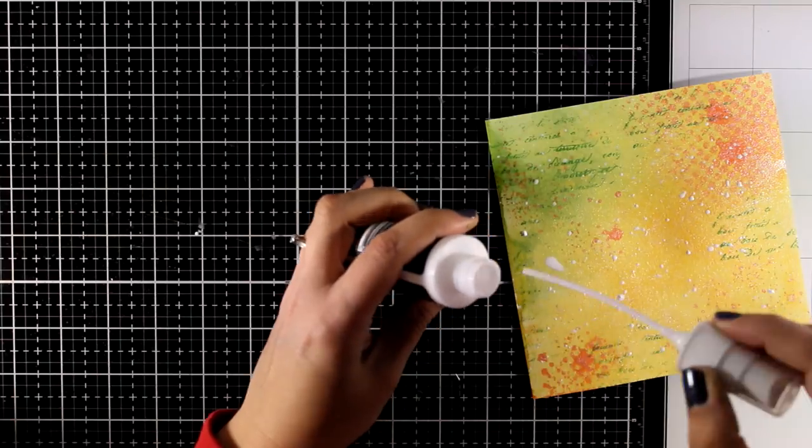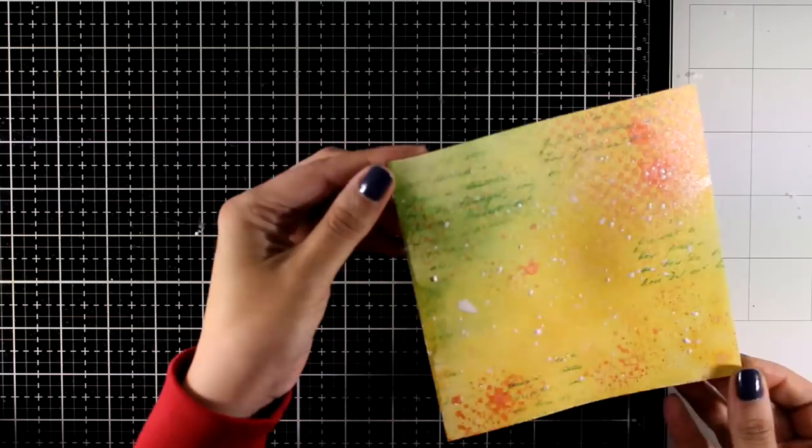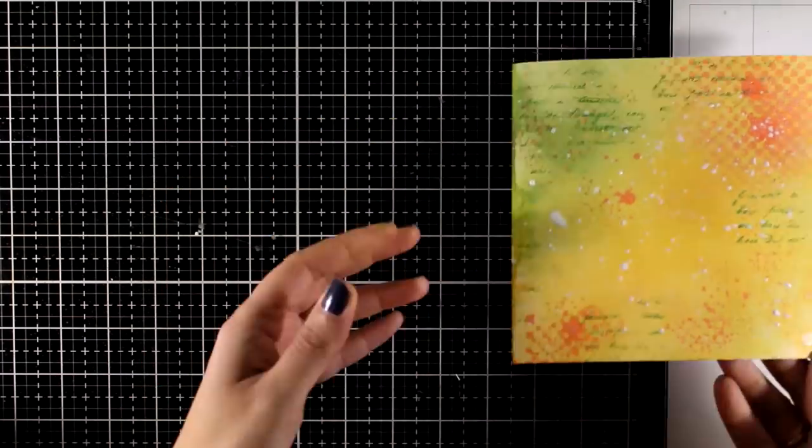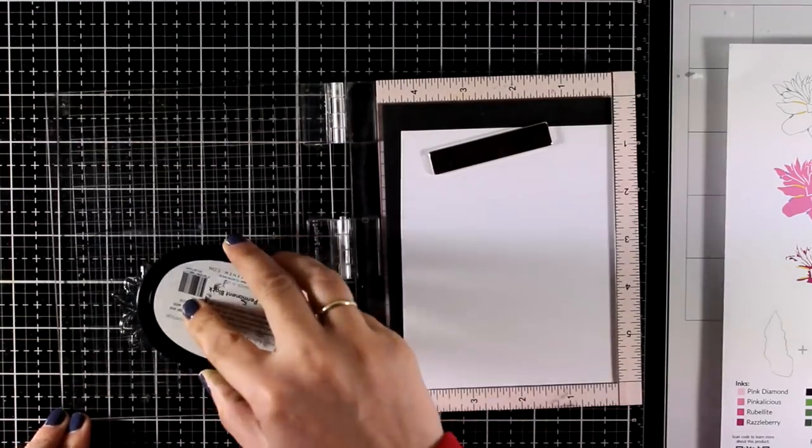Now I'm also going to add some white splashes. For the splashes I use the pure white spray by Altenew, which has a matte finish. I'm going to leave that aside to dry and start playing with my stamps.